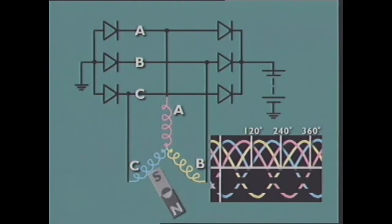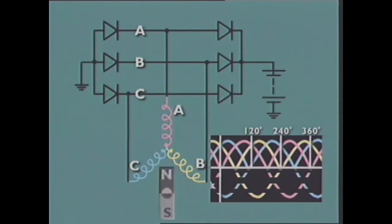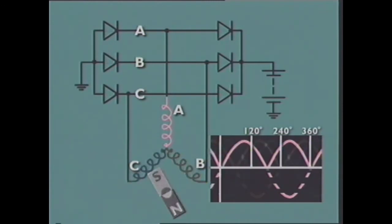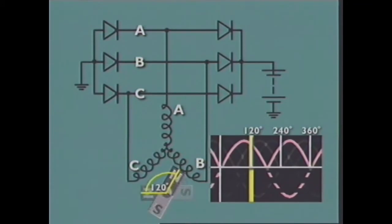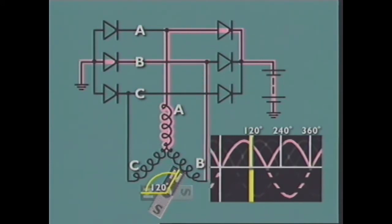In each revolution of the magnet, the polarity of each phase winding changes and as a result, the current changes direction. To provide a unidirectional or DC output, a complete circuit is needed for current to flow when each change in polarity occurs. As the rotor turns, it induces a voltage in the winding which generates current flow. In this position and with this polarity, the current path is as follows: output of winding A, positive diode A, alternator terminal B positive, battery positive terminal, battery ground B negative, alternator ground, negative diode B, output of winding B, neutral or star point.